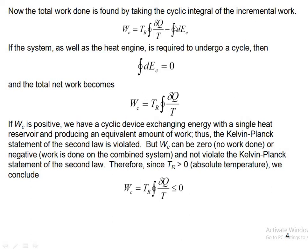Since the system undergoes a cycle and energy E is a property, the cyclic integral of any property equals zero — the initial and final values are the same. Therefore the cyclic integral of dE_C is zero, giving W_C = T_R times the cyclic integral of (δQ / T). If W_C were positive, we would have a cyclic device exchanging energy from a single heat reservoir and producing an equivalent amount of work, which violates the Kelvin-Planck statement of the second law.